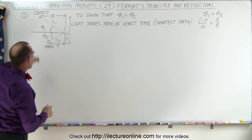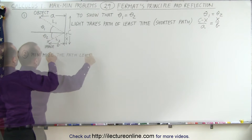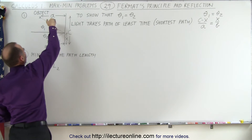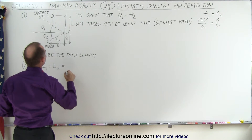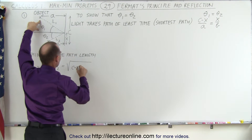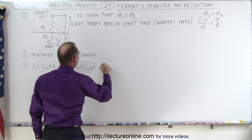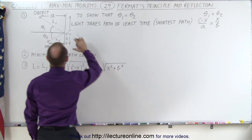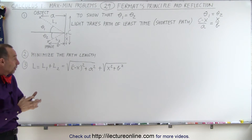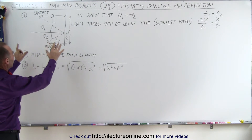Step one, we drew a diagram. Step two, we need to determine what we're trying to maximize or minimize. In this case, we're trying to minimize the path length. An equation for that would be: the total path length equals the sum of the two paths, l1 and l2. L1 can be defined as the square root of (c minus x) squared plus a squared. L2 would be the square root of x squared plus b squared. We don't need any constraints because we've already defined the lengths of those two.